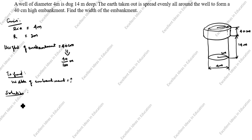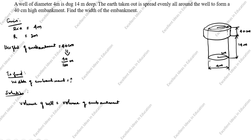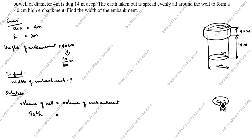What formula comes in this question? Volume of well equals volume of embankment. Volume of well — since the well is a cylinder, we use the volume of cylinder formula: pi r squared h. What is the volume of embankment formula? I will draw and show you. This is the embankment drawing. This is small r, and this is big R.